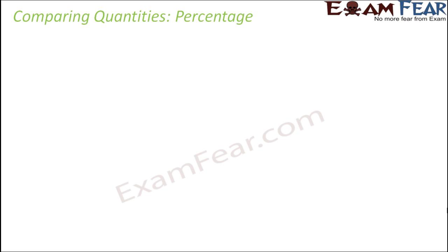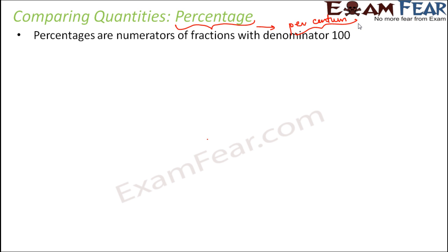Ratio is not the only thing useful in comparing quantities — percentage is another useful parameter. The word percentage is derived from a Latin word 'per centum', which means how much out of 100, or per hundred. For example, if you scored 70% in maths, that means you scored 70 out of 100. Percentages are numerators of fractions with denominator 100. We write only the numerator followed by the percentage symbol, because the symbol itself tells you the denominator is 100.